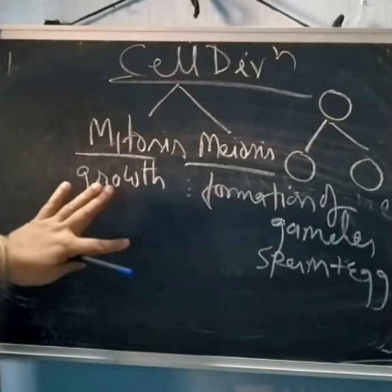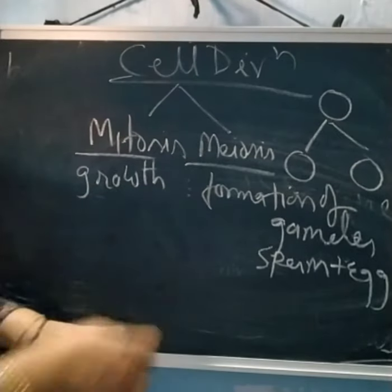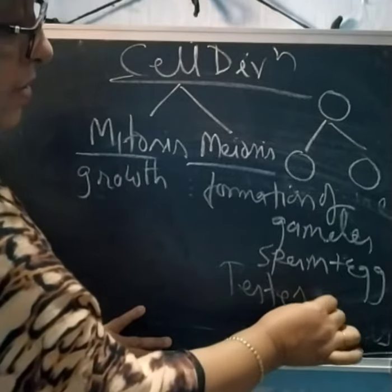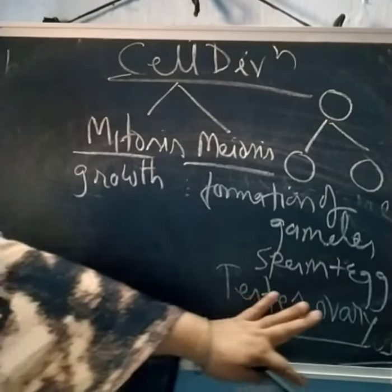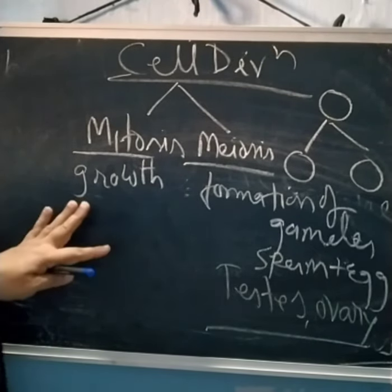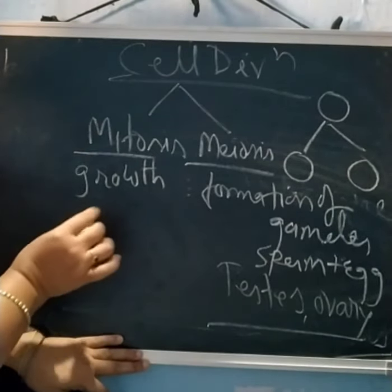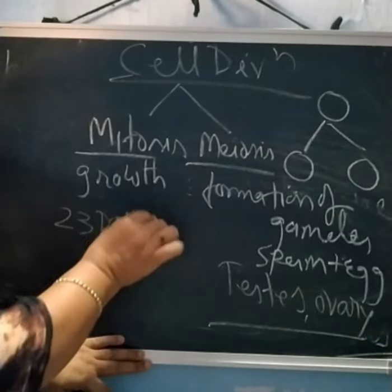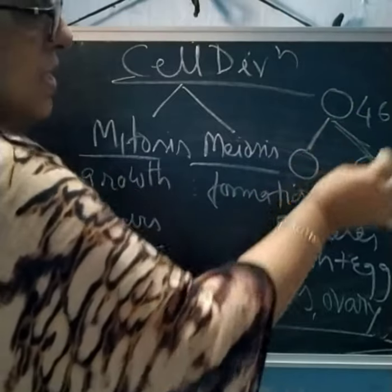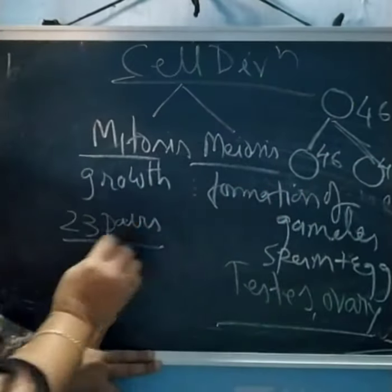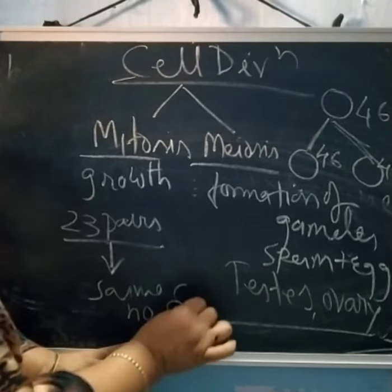Mitosis happens in body cells — all cells except the testes and ovaries — and helps in growth. Meiosis normally happens in the testes and ovaries, where gamete formation occurs. In humans, we have 23 pairs of chromosomes, meaning 46 chromosomes. In mitosis, when a cell divides into two, both daughter cells retain the same number of chromosomes — 46. This is why mitosis is called equational division.